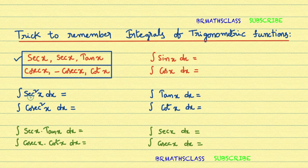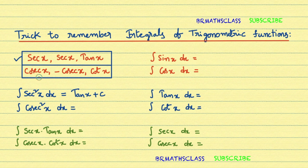For example, integral of sec²x dx: sec²x can be written as secant x times secant x. Using the box, secant x and secant x are accounted for, and what remains is tan x. So integral of sec²x dx is tan x + c. Similarly, integral of cosec²x dx: cosecant x times cosecant x — what remains from the box is minus cot x. So integral of cosec²x dx is minus cot x + c.